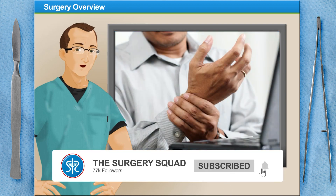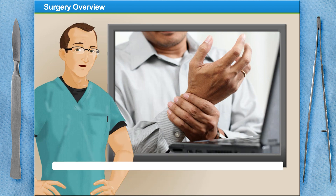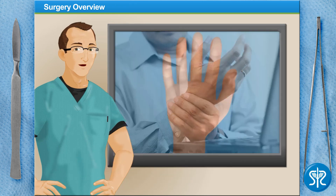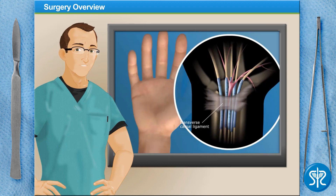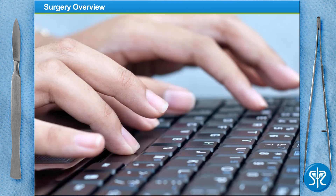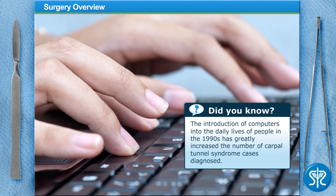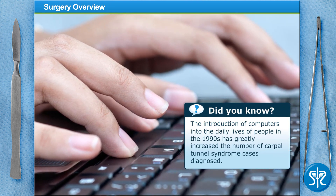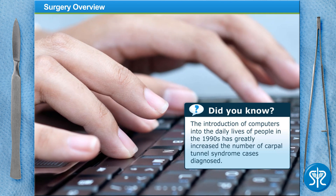Carpal tunnel syndrome is characterized by tingling, numbness, or pain in your hand and sometimes forearm. It develops due to the swelling of a ligament in the wrist known as the transverse carpal ligament. This swelling creates pressure on the median nerve, which is responsible for supplying feeling and movement to various parts of the hand. Performing repetitive motions with the hand or wrist over a long period is the main cause, and the condition is more commonly seen in women than men.